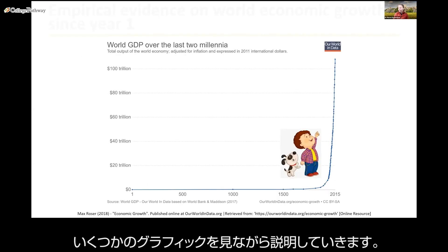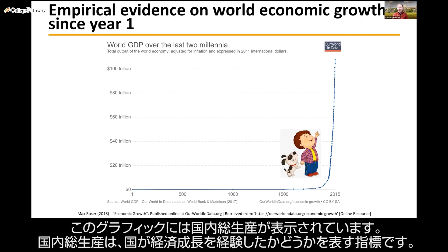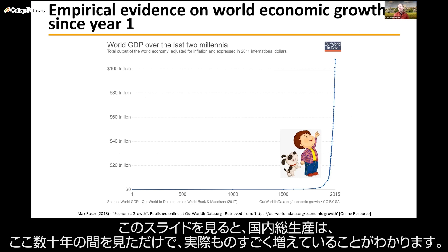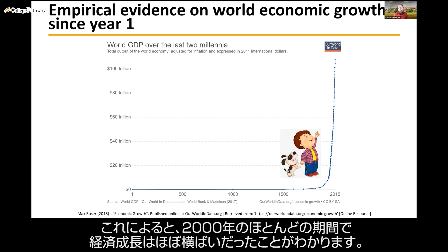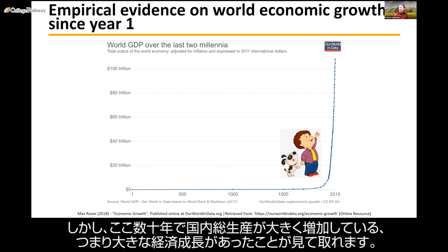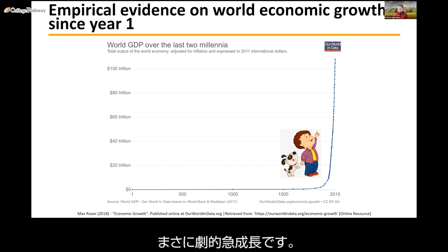I have a few graphics to talk you through. In this first graphic you see the Gross Domestic Product, which is a measure of whether countries have experienced economic growth. On this slide, covering the year zero to 2015 — so 2000 years of information — you can see that economic growth was pretty much flatlining for most of those 2000 years, and only in recent decades do you see a massive increase in GDP, suggesting that economic growth has been skyrocketing.